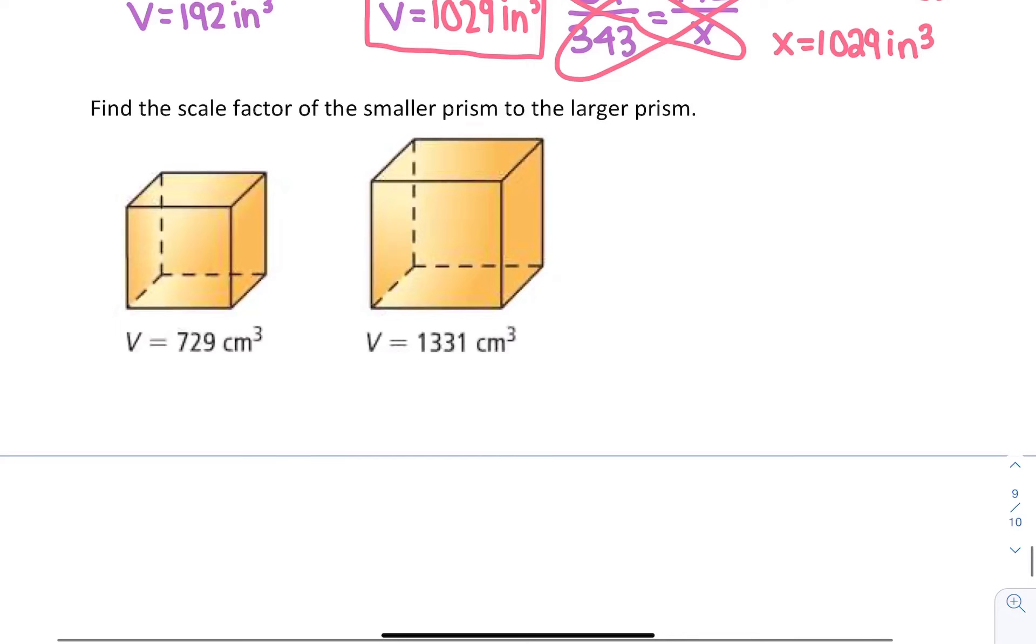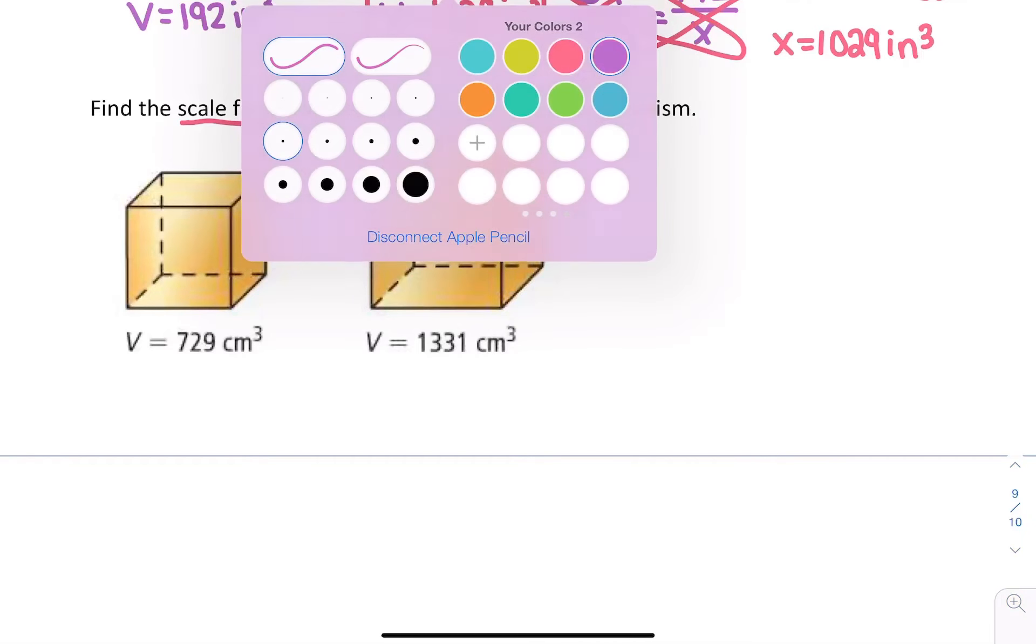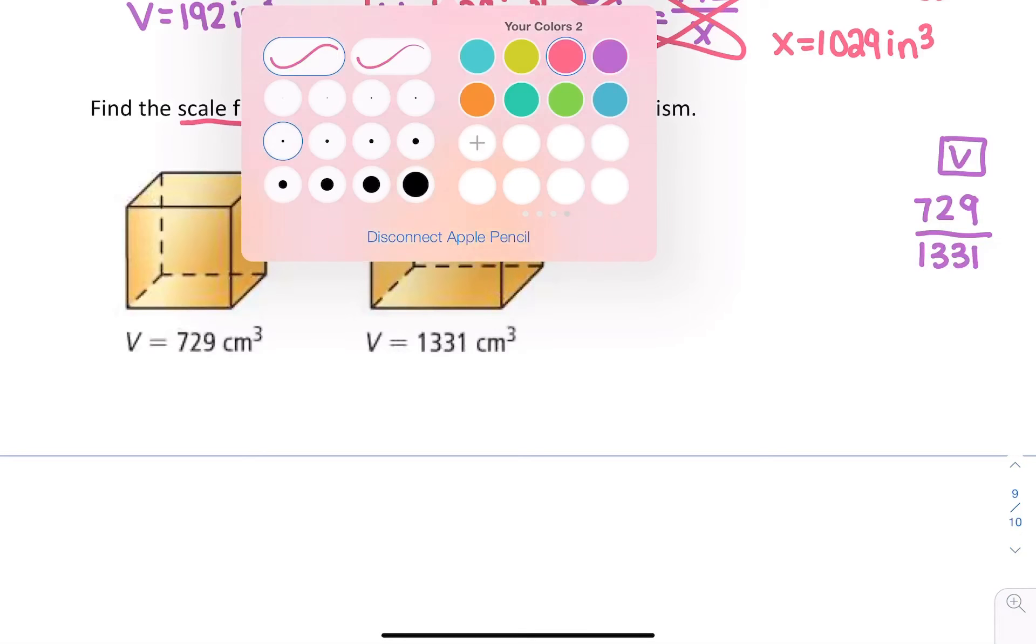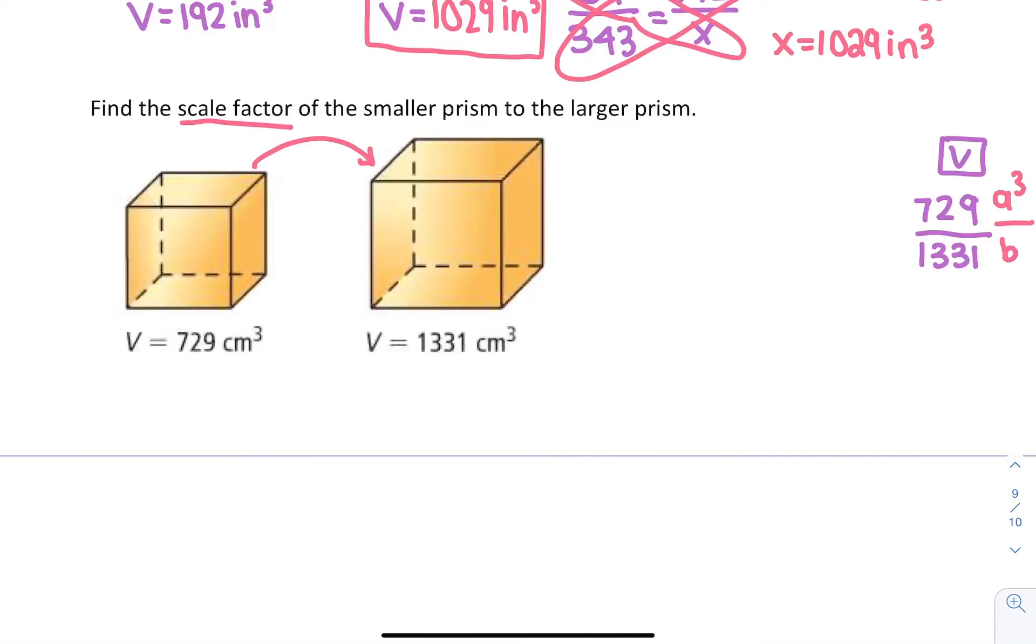This next problem is pretty similar. We're asked to find the scale factor of the smaller to the larger. So we want to know how do we get from the small to the large. To do this, we're going to have to figure out the different ratios. Now we're working backwards. We know the volume ratio is 729 to 1331, and we know that is a cubed over b cubed.